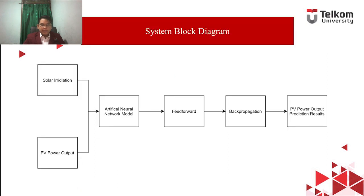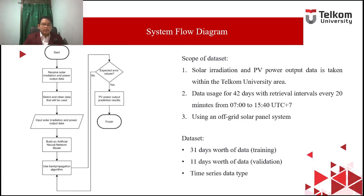For system planning, we have a system block diagram which shows that we have two inputs — solar irradiation and PV power output — which are our dataset and parameters. We feed these forward to our ANN layers and then train it using backpropagation to get our PV power output prediction results. The system flow diagram similarly shows that our dataset must be cleaned first before it can be used by our ANN, and that if the ANN doesn't meet our required values, we must retrain it until it meets our expectations.